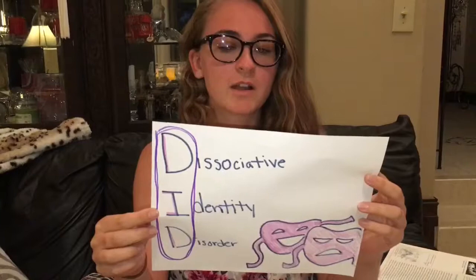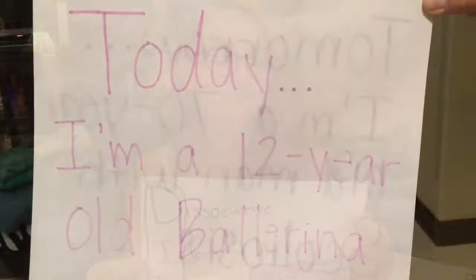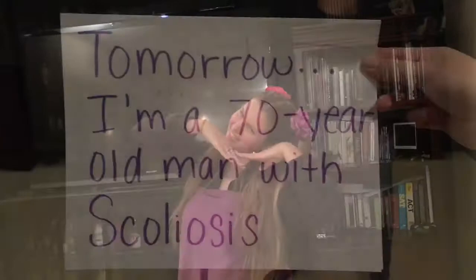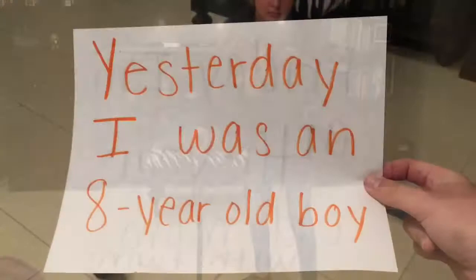[Skit illustrating DID: A character alternates between personalities — a 12-year-old ballerina, a 70-year-old man with scoliosis, an 8-year-old boy, and a 40-year-old mom with twins — demonstrating the shifting identities associated with dissociative identity disorder.]